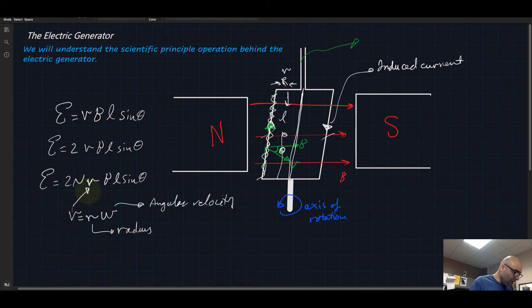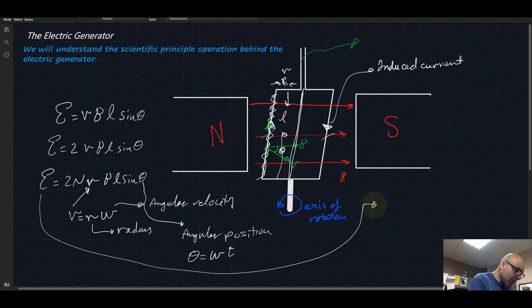So I can put that here instead of the velocity here. Theta is known as the angular position and that's equal to omega times t. Omega is the angular velocity and t is time. If you multiply velocity by time you get the position.